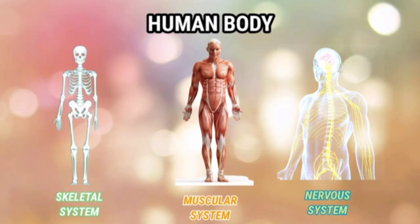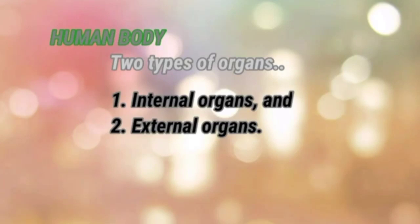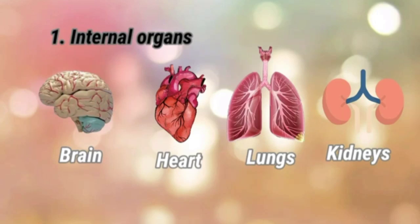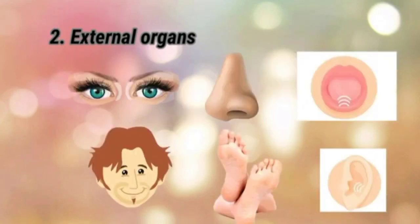Our human body has two types of organs: internal organs and external organs. Internal organs are present inside our body, like the brain, heart, lungs, and kidneys. The external organs include eyes, nose, tongue, head, legs, and ears.